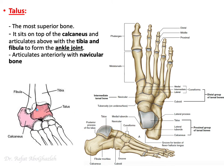The talus articulates inferiorly with the calcaneus, and superiorly with the tibia and fibula to form the ankle joint. Most importantly, the talus articulates anteriorly with the navicular bone. The calcaneus, on the other hand, articulates anteriorly with the cuboid — remember: C with C. Medially is the navicular side, and this is the lateral side.